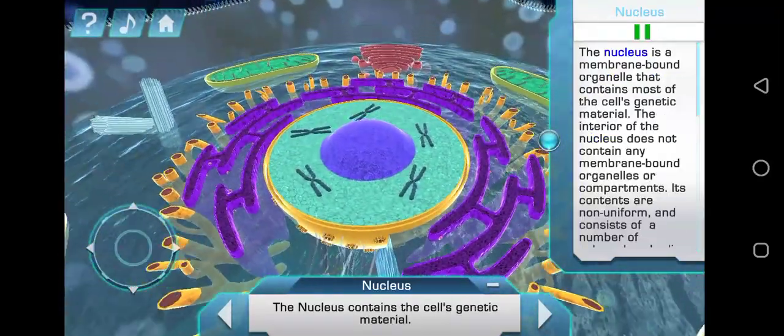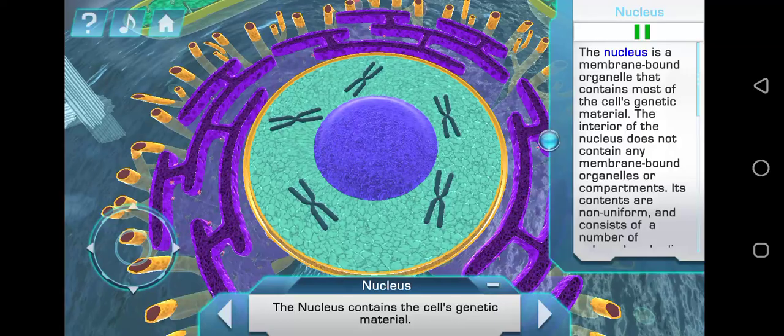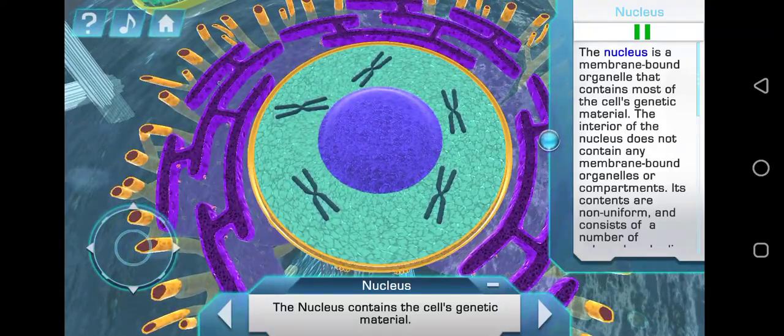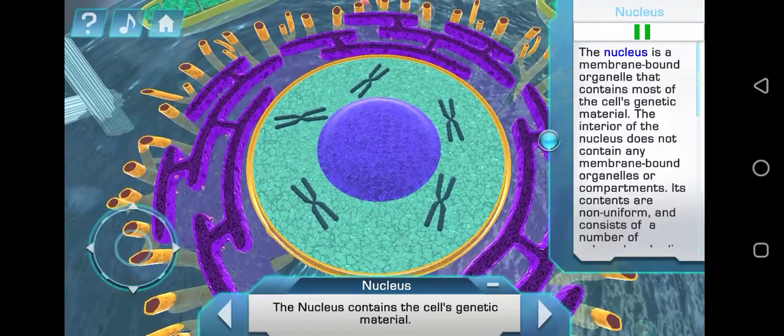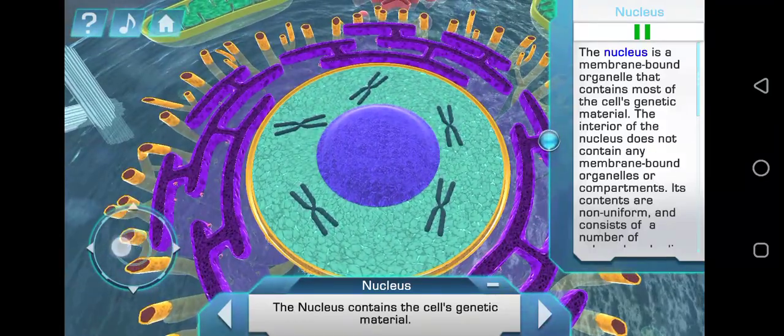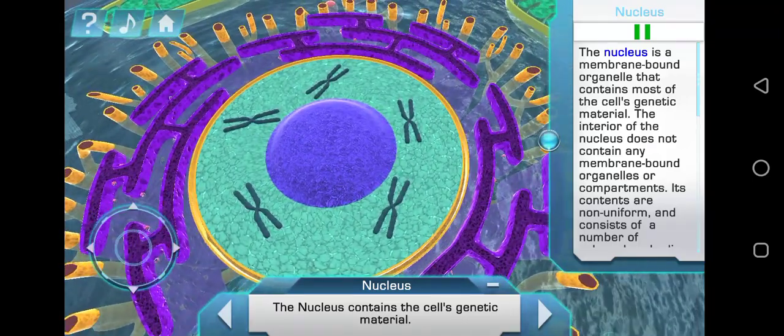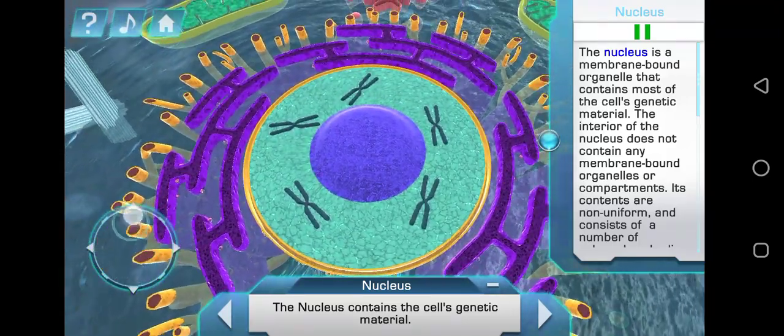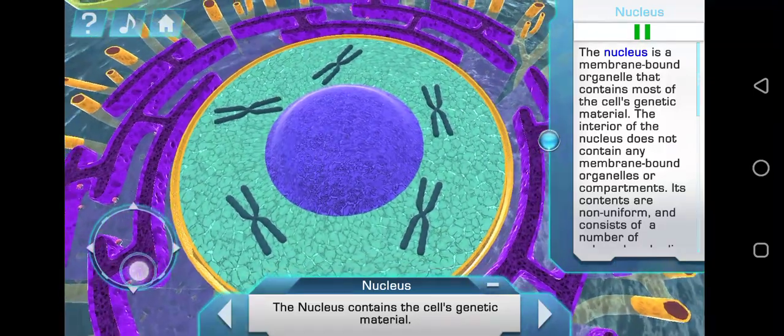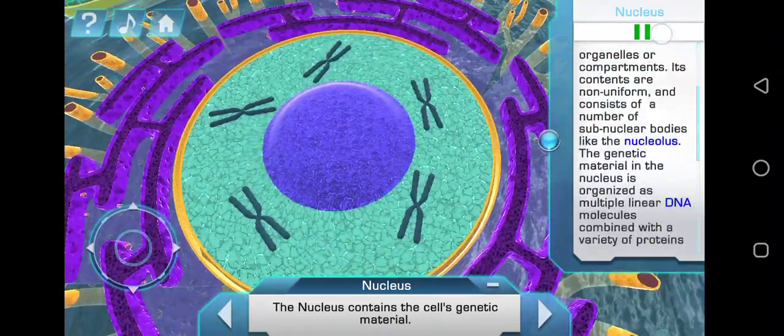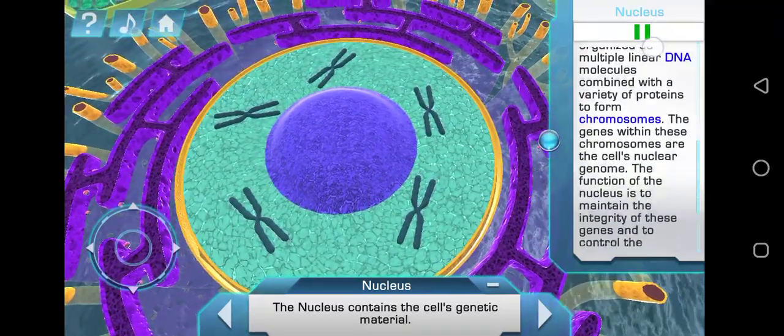The nucleus is a membrane-bound organelle that contains most of the cell's genetic material. The interior of the nucleus does not contain any membrane-bound organelles or compartments. Its contents are non-uniform and consist of a number of sub-nuclear bodies like the nucleolus. The genetic material in the nucleus is organized as multiple linear DNA molecules combined with a variety of proteins to form chromosomes.